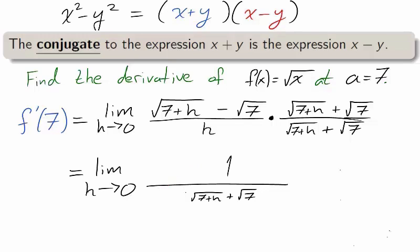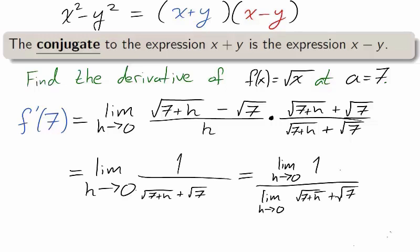Now notice that the limit of the denominator is non-zero. This means that we are in a position to use our limit laws from section 2.3. We use the quotient rule moving the limit into the numerator and the denominator. After using direct substitution with h equals 0, we find that the limit is 1 over 2 times the square root of 7.